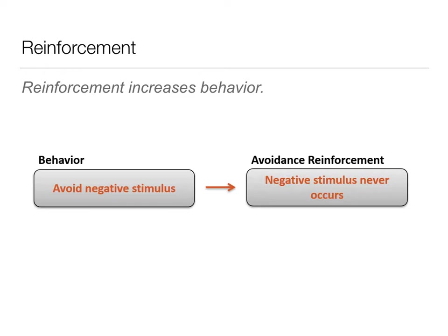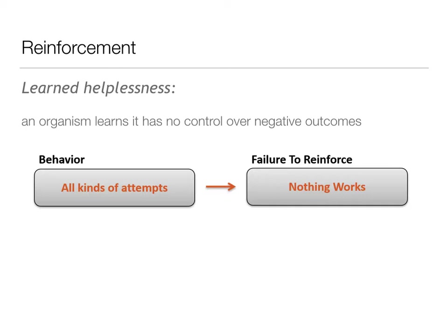A reinforcement increases behavior. Sometimes this happens through avoidance reinforcement — avoiding a negative stimulus in the first place. For the seatbelt example, if next time you put it on right away without even forgetting, that's avoidance reinforcement because you didn't want to hear that loud, annoying beeping. This can also extend to learned helplessness: if an organism learns it has no control over negative outcomes and all its attempts fail, it gives up. If cats or rats in boxes could do nothing to get out or get fed regardless of what they tried, they'd just sit in the corner and give up.